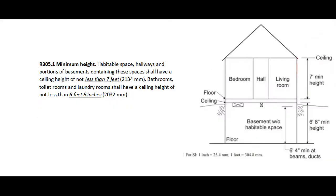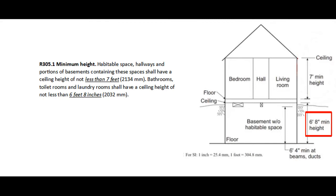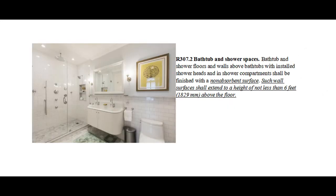R305.1 Minimum Height: Habitable space, hallways, and portions of basements containing these spaces shall have a ceiling height of not less than 7 feet. Bathrooms, toilet rooms, and laundry rooms shall have a ceiling height of not less than 6 feet 8 inches. R307.2 Bathtub and Shower Spaces: Bathtub and shower floors and walls above bathtubs with installed shower heads and in shower compartments shall be finished with a non-absorbent surface. Such wall surfaces shall extend to a height of not less than 6 feet above the floor.